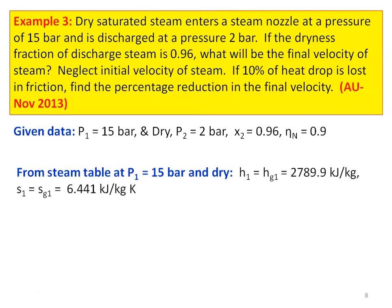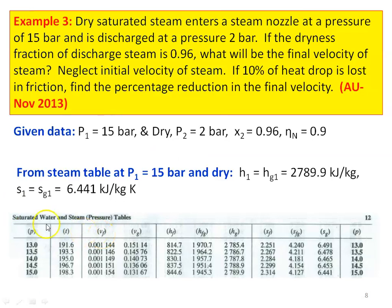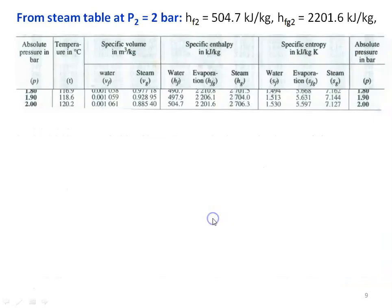From the steam table for 15 bar — it is dry saturated steam, so we take the saturated table. For 15 bar: H1 equal to Hg1 equal to 2789.9 kilojoules per kilogram, and S1 equal to Sg1 equal to 6.441 kilojoules per kilogram Kelvin. From the steam table for P2 equal to 2 bar, table number 2: Hf2 equal to 504.7 and Hfg2 equal to 2201.6 kilojoules per kilogram.